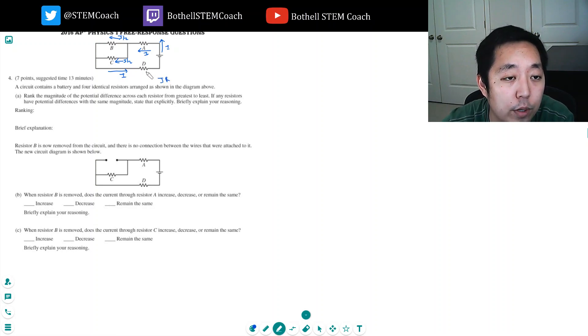So the drop across any of these resistances is I times R. So A and D both have a full I going through them, so they're I times R. B and C have half the voltage drop because they have the same R but half the current flowing through them. So it's really A is equal to D which is greater than B is equal to C.